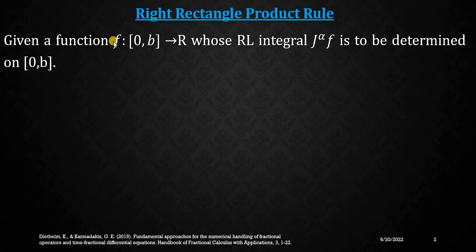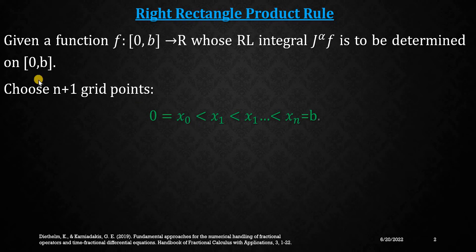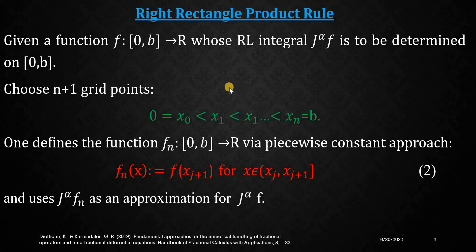We are given a function f from the domain 0 to b to the set of real numbers, and this is the function whose RL integral is to be determined on this domain. We have broken this domain into n plus 1 grid points, where the initial point x-naught is 0 and the final point x-n is b, as given in the closed interval or the domain of the function. When we think of approximation of a function by a piecewise interpolation technique, the simplest function that comes to mind is the piecewise constant function.